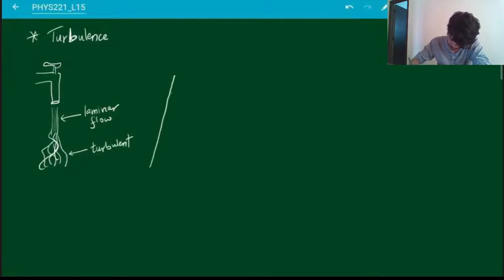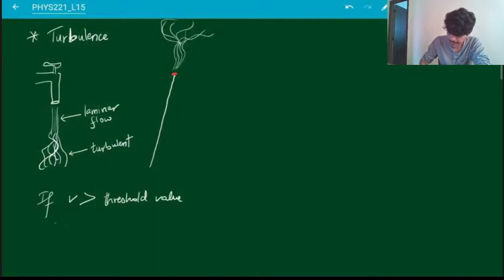The same thing you will notice when you light an agarvati, an incense stick. First the smoke rises up in a very nice laminar manner, and after some time it becomes turbulent. Basically, if v is greater than some threshold value of velocity, then the flow becomes turbulent—it's not steady, not laminar anymore.